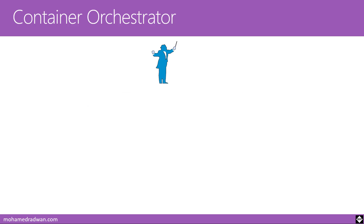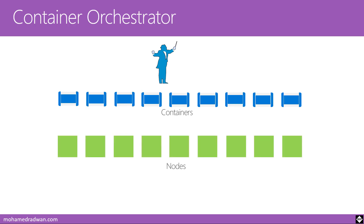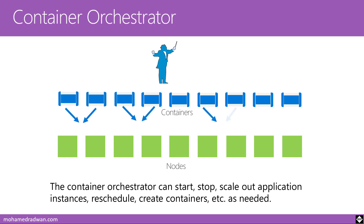The answer is by using a container orchestrator. Since we may end up with many containers running on nodes or virtual machines, we need an orchestrator that can determine which container runs on which virtual machine. For example, if an application needs to scale out, the container orchestrator creates new containers on the virtual machine with the most available resources. It is responsible for starting, stopping, scaling, rescheduling, and creating containers as needed.